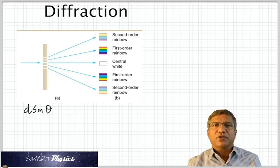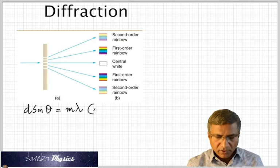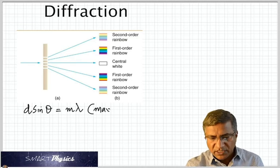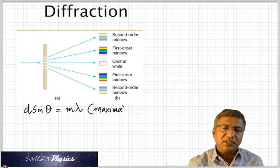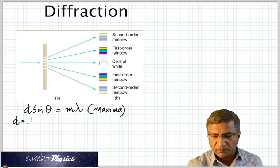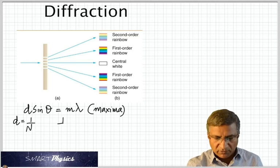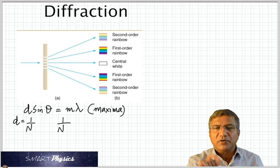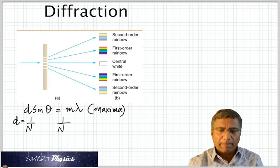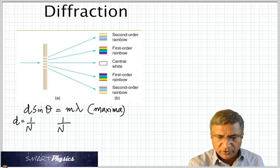And in this case, the condition for maxima remains the same. It's D sin theta is equal to M lambda. But D is going to be represented in terms of the number of slits in a meter. So D is 1 by N, where N is the number of slits in 1 meter.